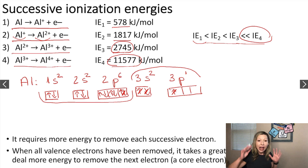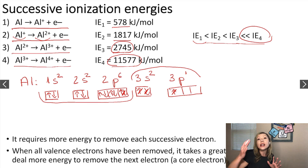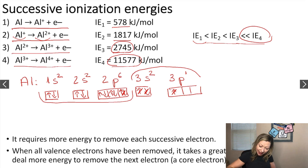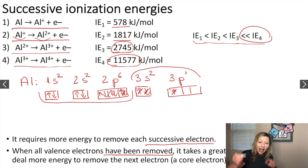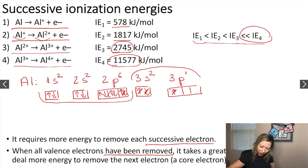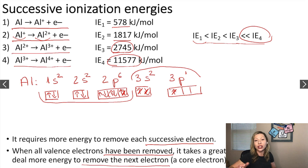To summarize: it requires more and more energy to remove each successive electron. And when all valence electrons have been removed, it takes a great deal more energy to remove the next electron, which is a core electron.